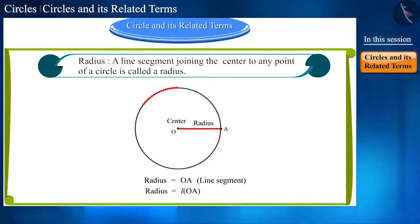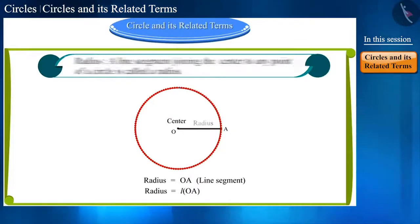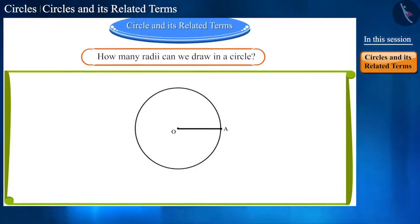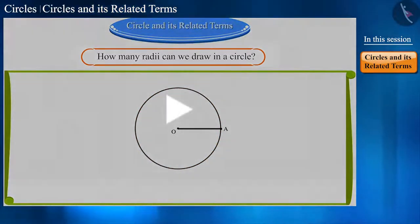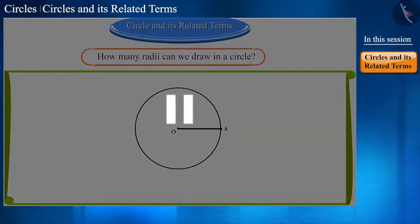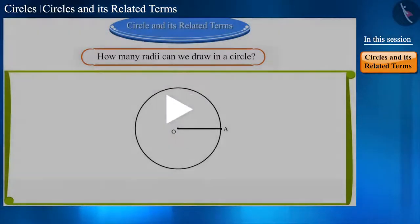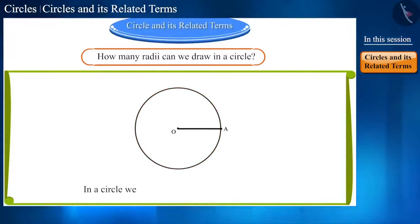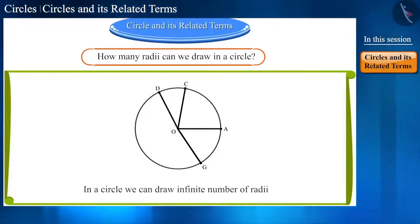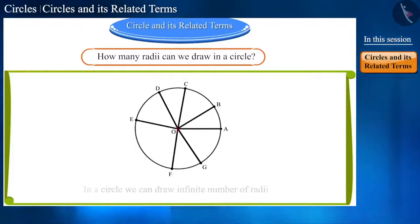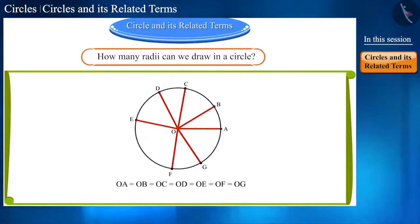Friends, there are countless points on the circle. So, can you tell how many radii we can draw in a circle? You can pause the video and think of the answer. Yes, friends. In a circle, we can draw infinite number of radii. But, all will have the same length.